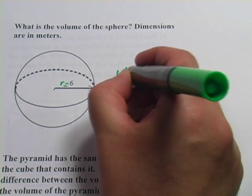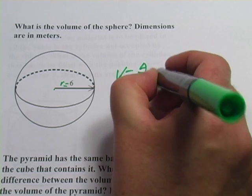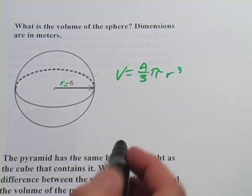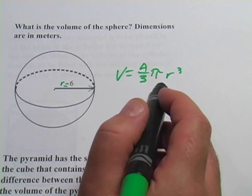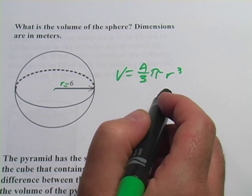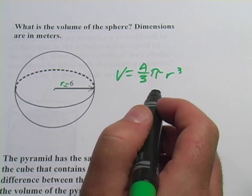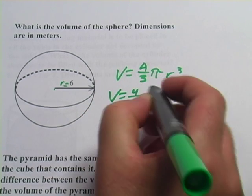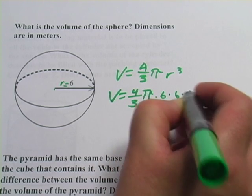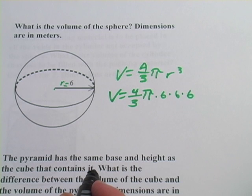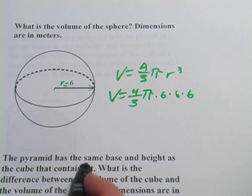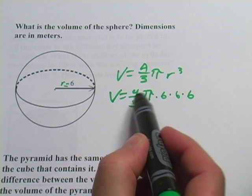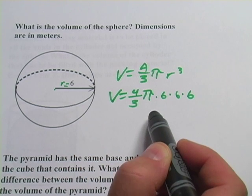The volume of a sphere is four-thirds pi r cubed. When you cube a number, you multiply it by itself three times. So I would write this as four-thirds pi times six times six times six. I'll take 3.14 for pi and multiply by six by six by six, then multiply by four and divide by three.